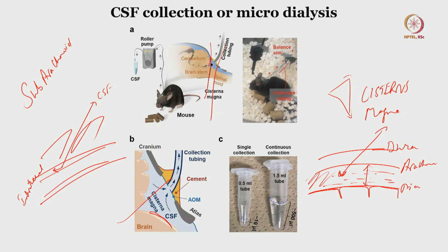CSF collection or microdialysis is another minimally invasive way of looking into the central nervous system. If your study involves collection of biological fluid, this is one way of doing it, and you need to know the anatomy inside out to access these spaces. If it is the spinal canal, it is called lumbar puncture — a very important diagnostic tool in patients for various infectious diseases like meningitis, or for cancer patients where we need to collect CSF for studies involving biochemical and cellular markers for the pathology. This is one very important way of collecting the CSF.